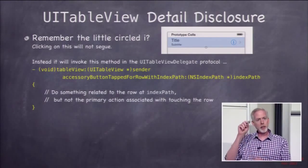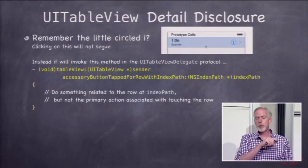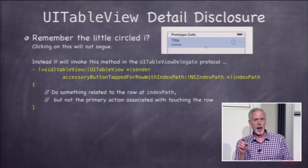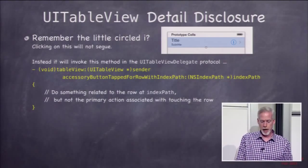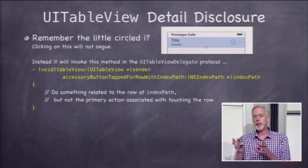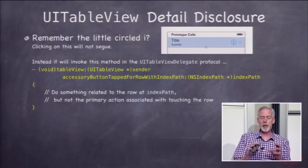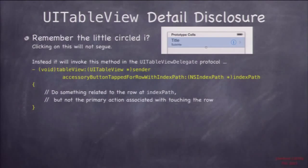Remember that little circled eye — the special detail disclosure button? When you tap on it, it won't do what the row normally does. If you tap somewhere else in the row, the row does its normal thing. But if you tap on the little eye, it calls tableView:accessoryButtonTappedForRowWithIndexPath in the UITableViewDelegate protocol. It tells you the index path of the button that was pressed — this is usually where you provide ancillary information related to the row, but different from the main action. So you can click on the row or on the little eye, and different things happen.